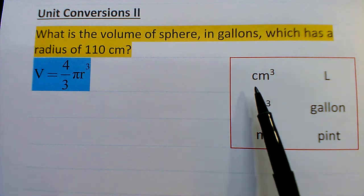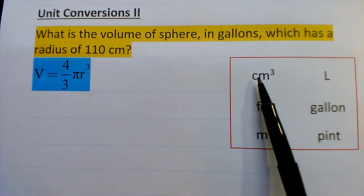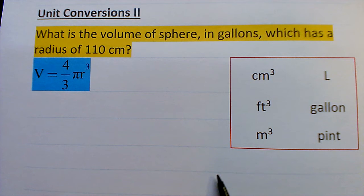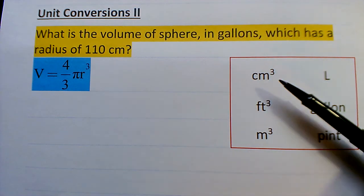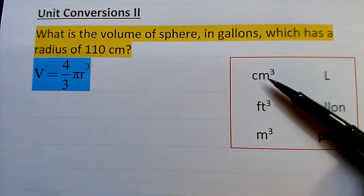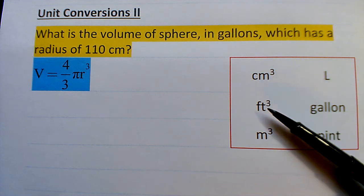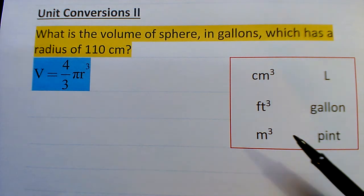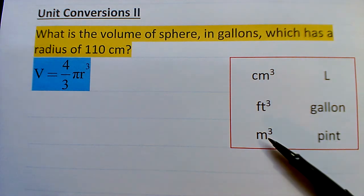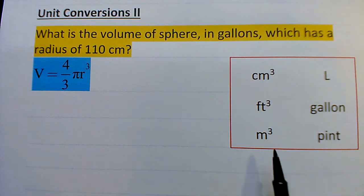And then there are what I call derived volume units, because they're derived from length units. So centimeter cubed is a centimeter times a centimeter times a centimeter, same thing with foot cubed, or cubic foot, cubic meter, and so on. The units on the left are derived volume units.